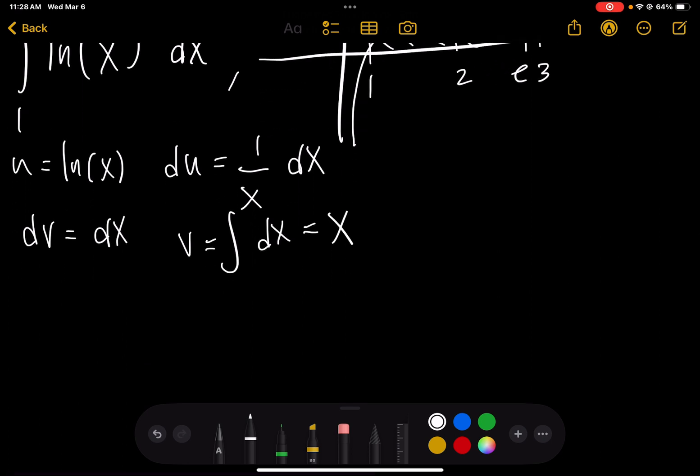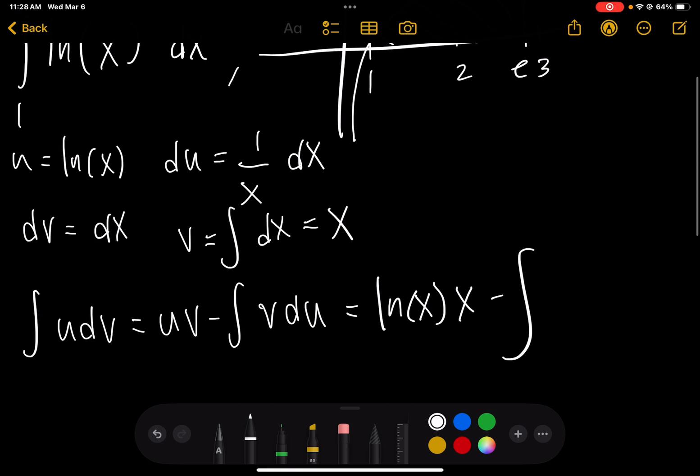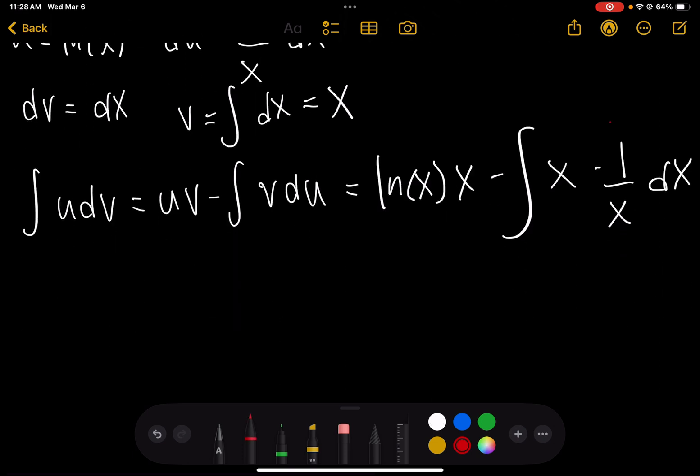So now we have to use the integration by parts formula. The integral of u dv is uv minus the integral of v du. So our u is the natural log of x, our v is x, minus the integral where v is x and du is 1 over x dx. Here you can see that x is divided to 1, so we have x ln x minus the integral of dx.